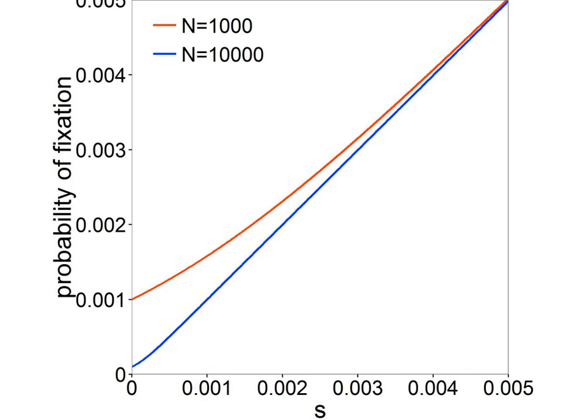These mutations can fix in small Ne populations through genetic drift. In large Ne populations, these mutations are purged by selection.